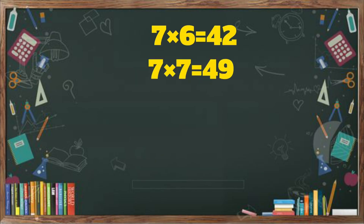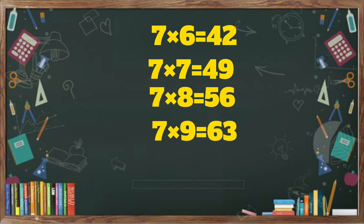7 7s are 49. 7 8s are 56. 7 9s are 63. 7 10s are 70.